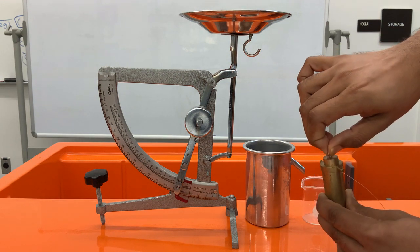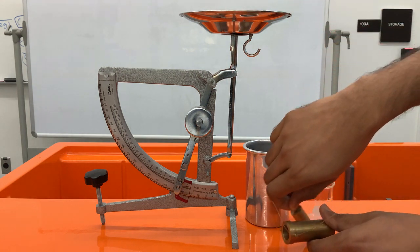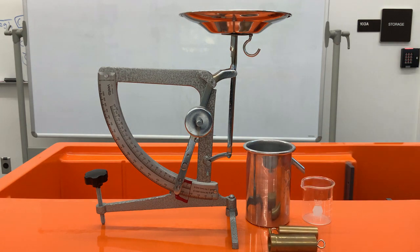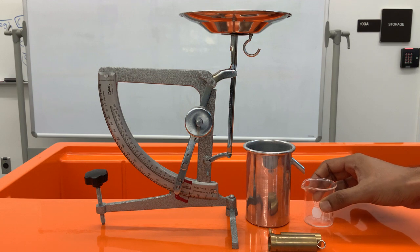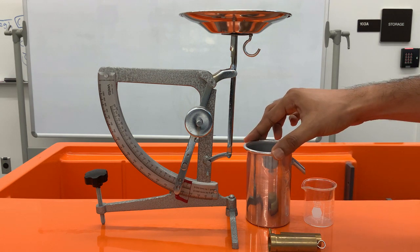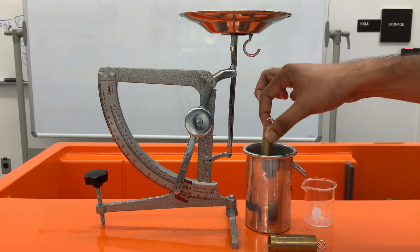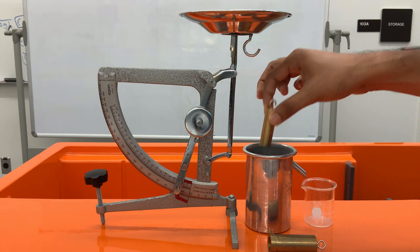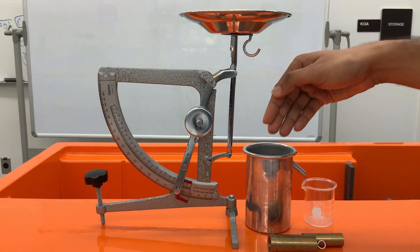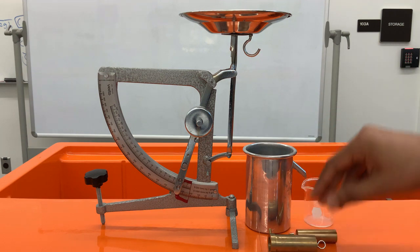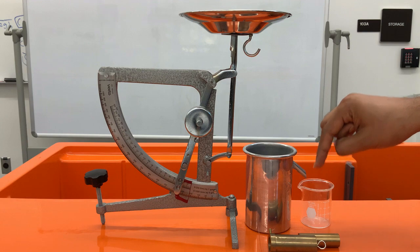We also have a glass container and this is the displacement vessel. What it will do is that once I immerse the cylinder inside the water-filled displacement vessel, it will displace the water same volume as the cylinder and the excess water will go inside that plastic container.